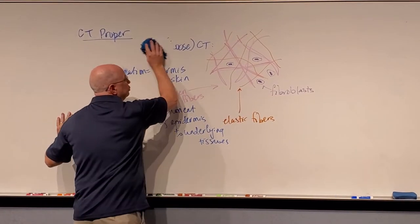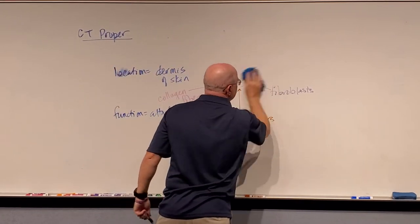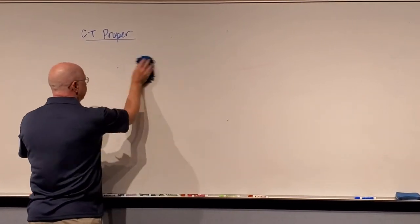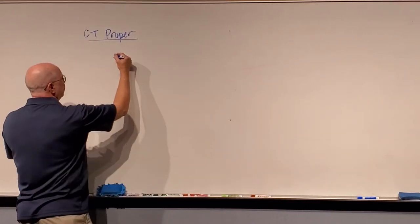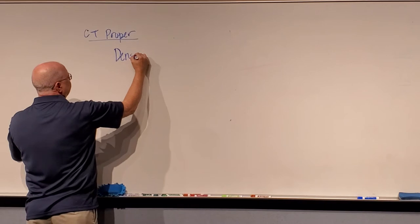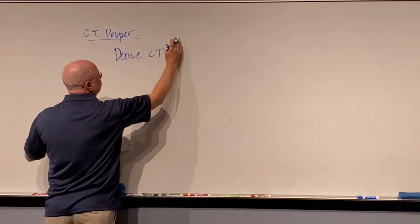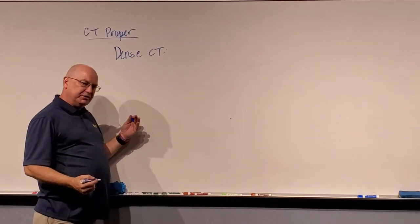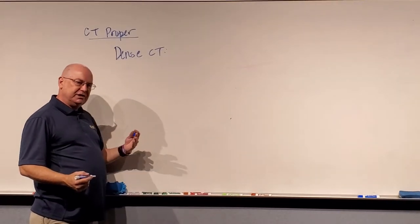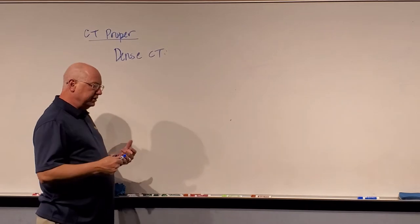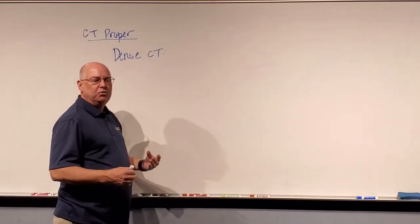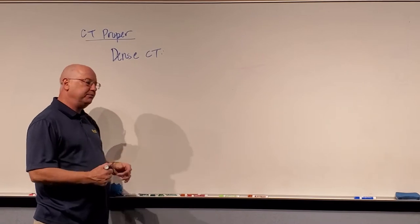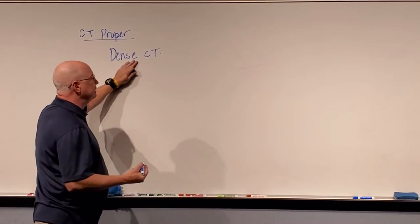The next connective tissue proper we're going to look at is dense connective tissue. I'm going to do them a little bit out of order like I do in lab because it makes sense to me that way. For dense connective tissue, there's two different types: a dense fibrous connective tissue or white fibrous connective tissue, and another one called dense irregular. We're going to talk about fibrous or dense fibrous connective tissue.